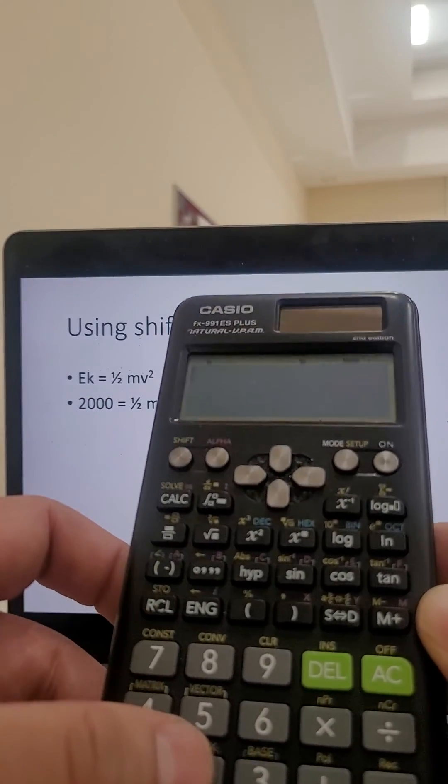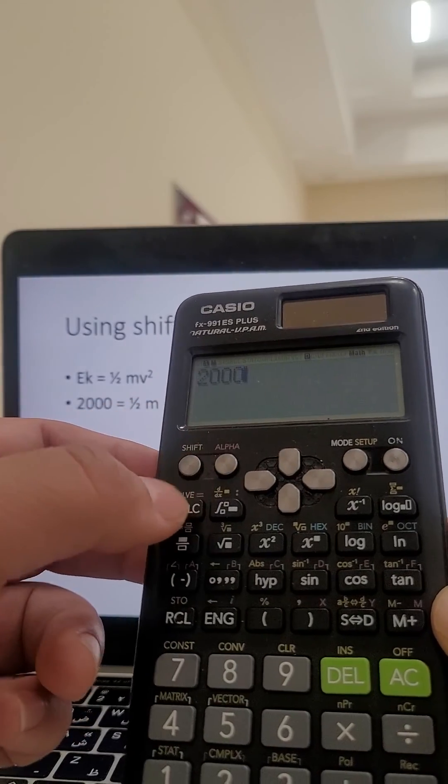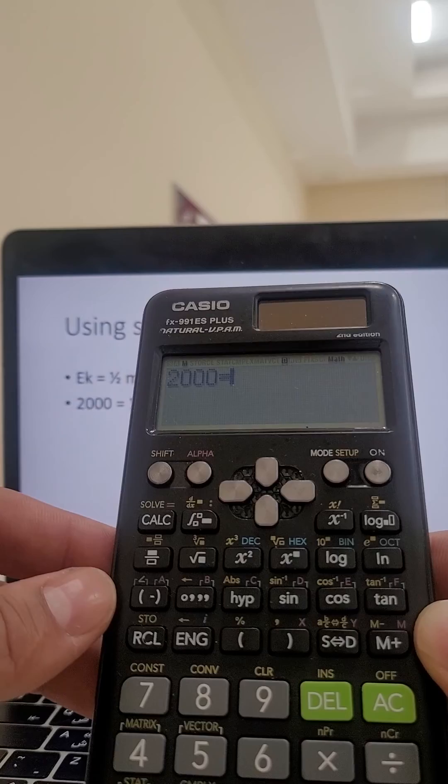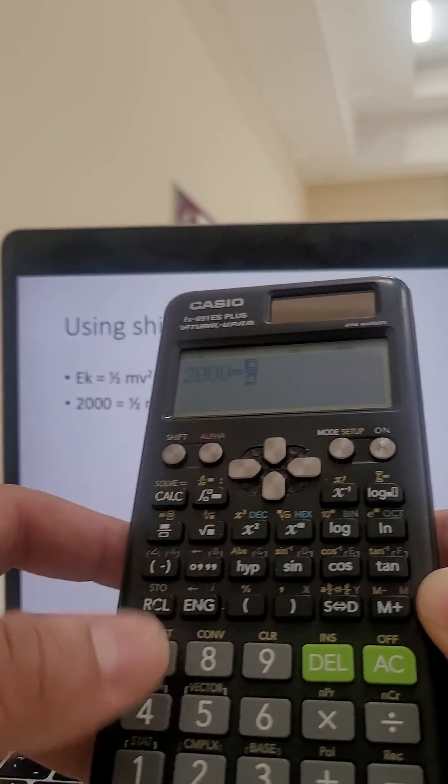I will start by writing 2000. And then I'm going to press alpha equals. So I now have a little equals there. So that's in red. Alpha equals. A half. So I can do a fraction.